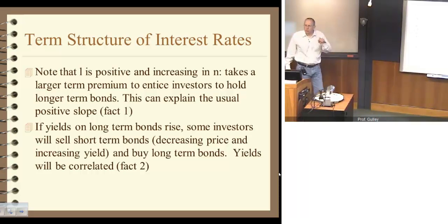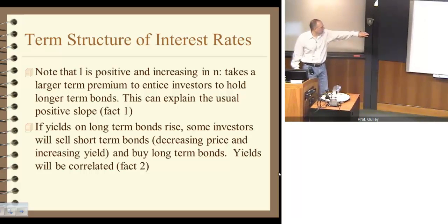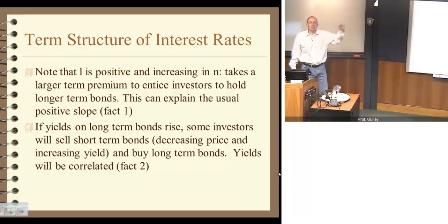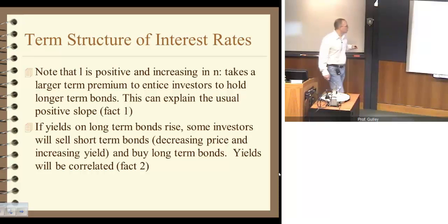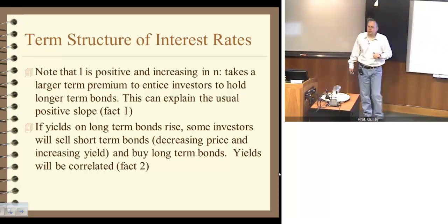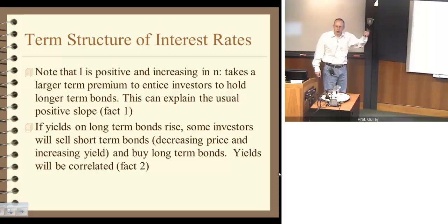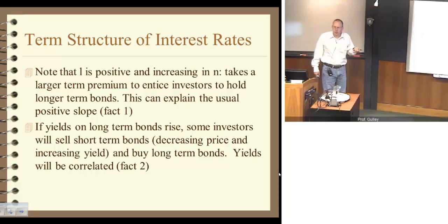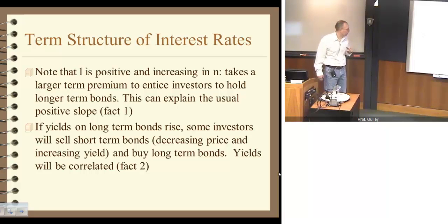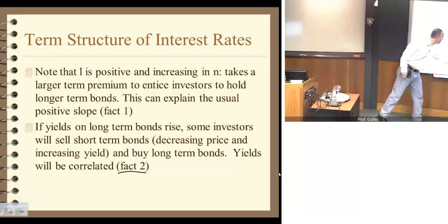The liquidity premium hypothesis says bond buyers and sellers can be enticed out of their preferences. Suppose long-term interest rates go up — if they rise relative to short-term interest rates, some bond buyers will sell their short-term securities and buy long-term ones. What happens is that yields tend to move together: short-term interest rates tend to move along with long-term interest rates, not perfectly, but enough so it's a general empirical observation. This helps explain Fact 2.